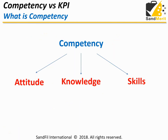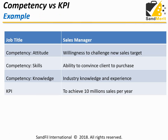Competency comprises of three elements: attitude, knowledge, and skills. Let's look at an example of a sales manager. The attitude expected is the willingness to challenge the new sales target. Skills would be the ability to convince the client to purchase. Knowledge is the industry knowledge and experience. The KPI is the end result — in this example, achieving 10 million sales per year. It is very clear that competency and KPI are very different.